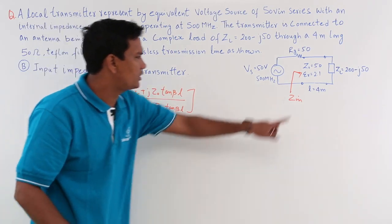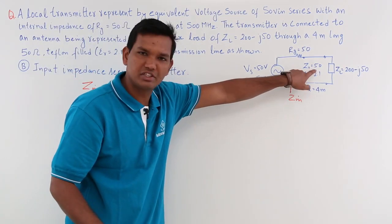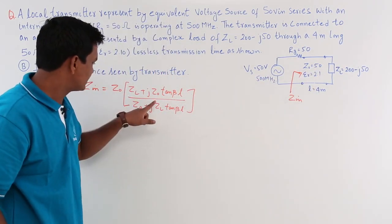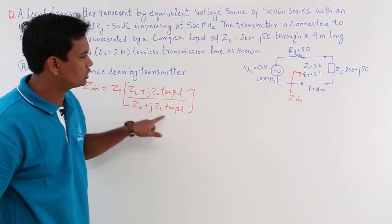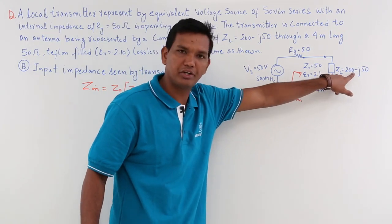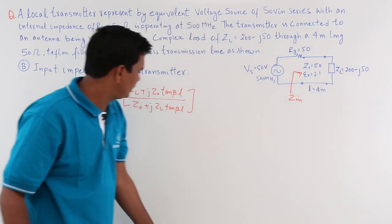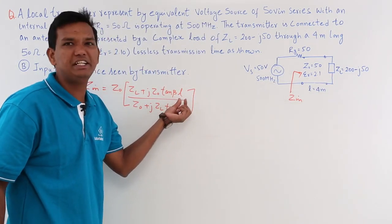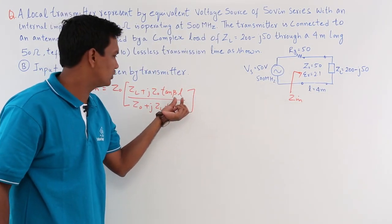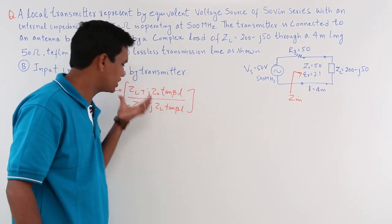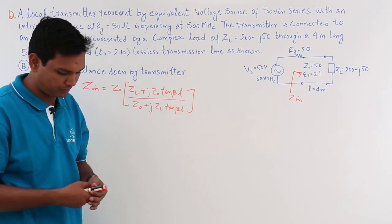Z_naught is given to us, which comes out to be 50. Z_L is also given, which is a complex quantity. The only thing I have to determine is what βL is. Once I find the βL part, this question is complete.